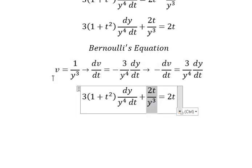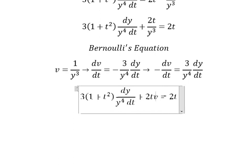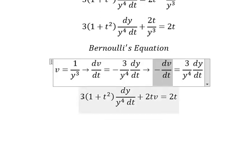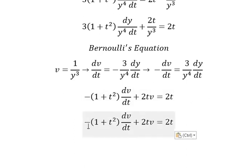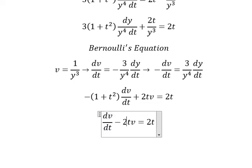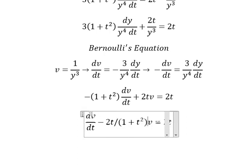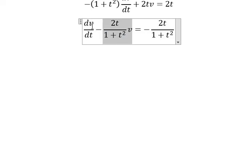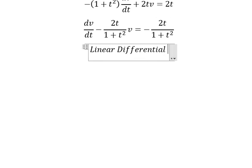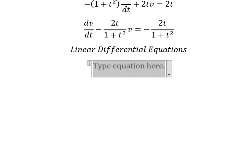We substitute this term with v, and we have 2tv. This term we replace with negative dv over dt. Next, we divide both sides by negative 1 plus t squared. Now we have v and the first derivative of v, so this is a linear differential equation. We can use the integrating factor method.